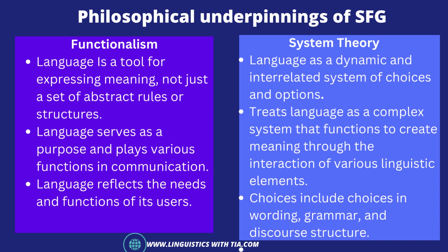SFG also draws from system theory, which considers language as a dynamic and interrelated system of choices and options. It treats language as a complex system that functions to create meaning through the interaction of various linguistic elements. In SFG, language is analyzed in terms of systems or networks of choices, where each linguistic choice is seen as part of a larger language system. These choices include wording, grammar, and discourse structure.